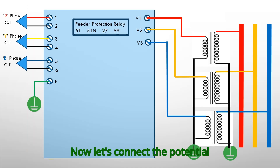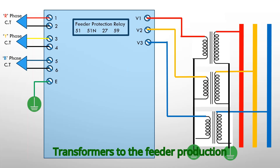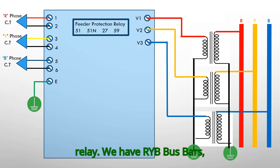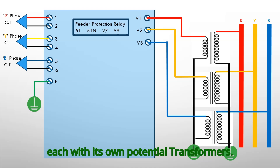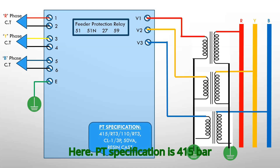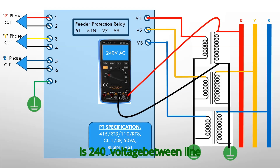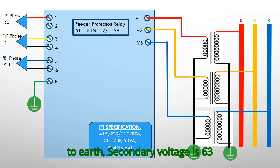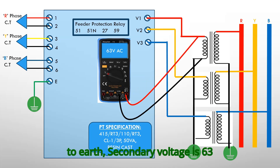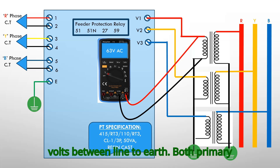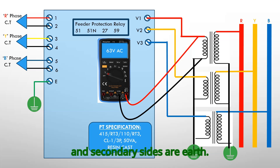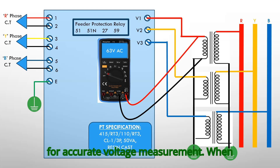Now let's connect the potential transformers to the feeder protection relay. We have R, Y, B bus bars, each with its own potential transformer. The PT specification is 415/√3 primary and 110/√3 secondary, indicating a primary voltage of 240V AC line-to-earth and a secondary voltage of 63V line-to-earth. Both primary and secondary sides are earthed. Understanding PT connection is crucial for accurate voltage measurement.